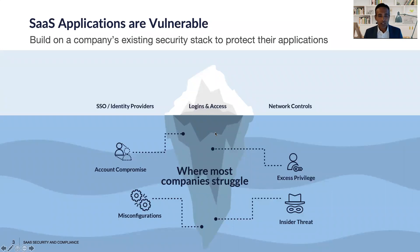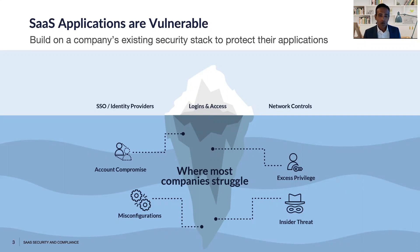Before I share more about Obsidian, I want to talk about the state of SaaS security. You have invested in identity access management solutions. You have invested in network controls like CASB to protect your SaaS applications. But we believe neither of those categories addresses use cases like early detection of account compromise, recognizing malicious or indisciplined insider activity, configuration drift creating enterprise risk, or users having more access privilege than they need. We solve for these use cases and complement your investment in IAM and CASB.